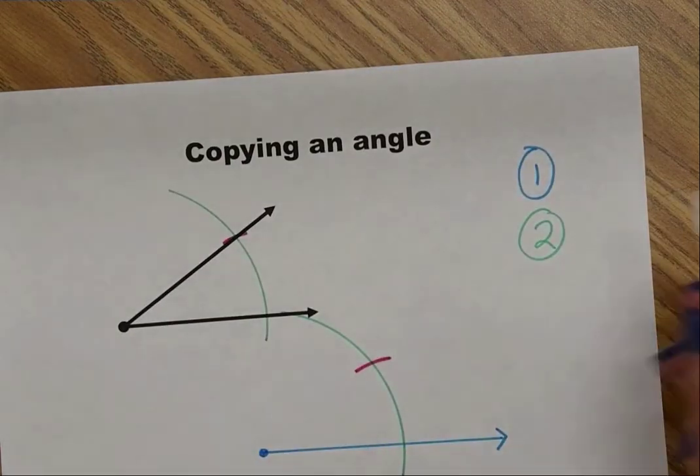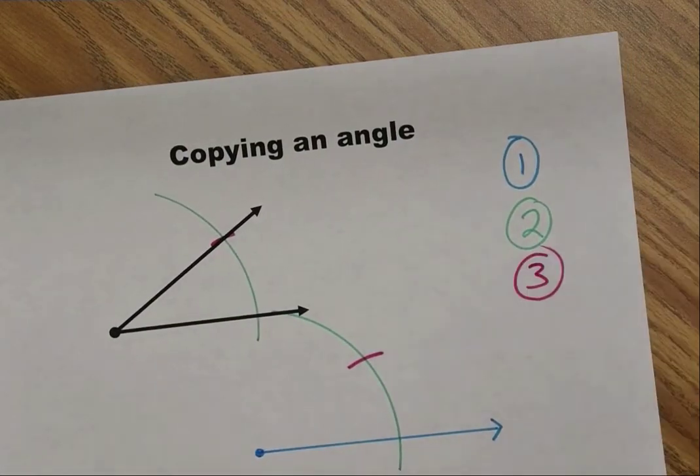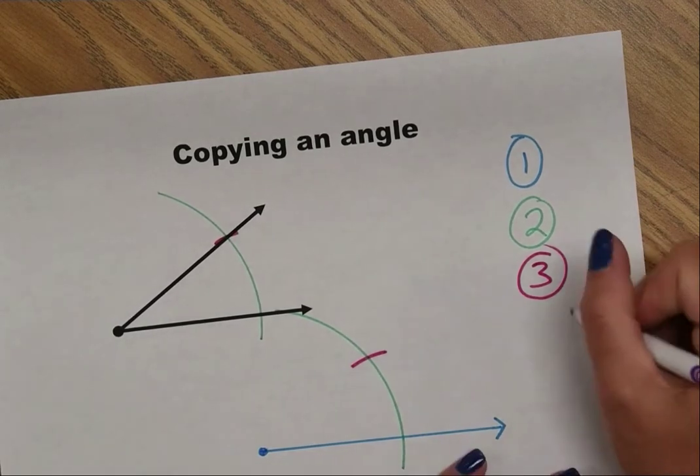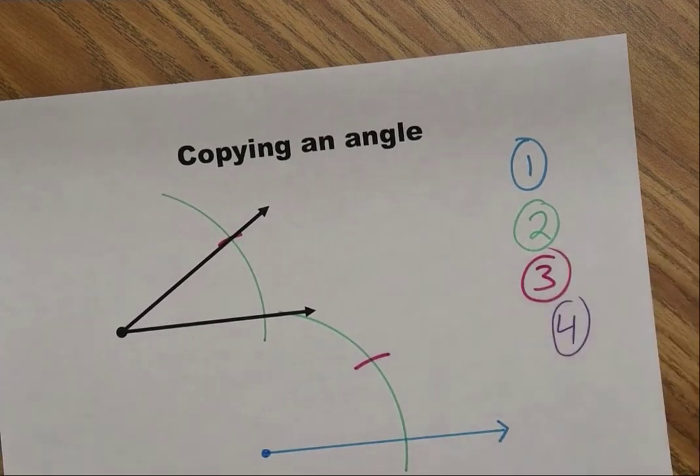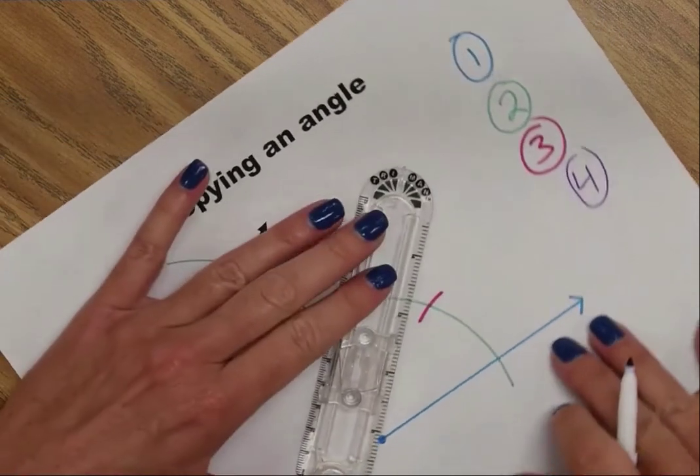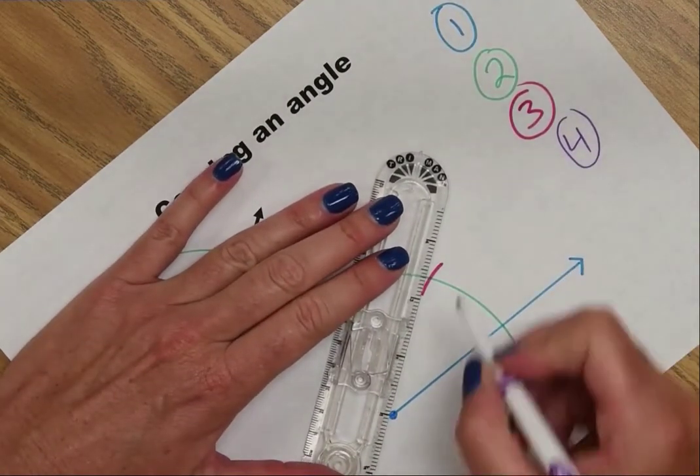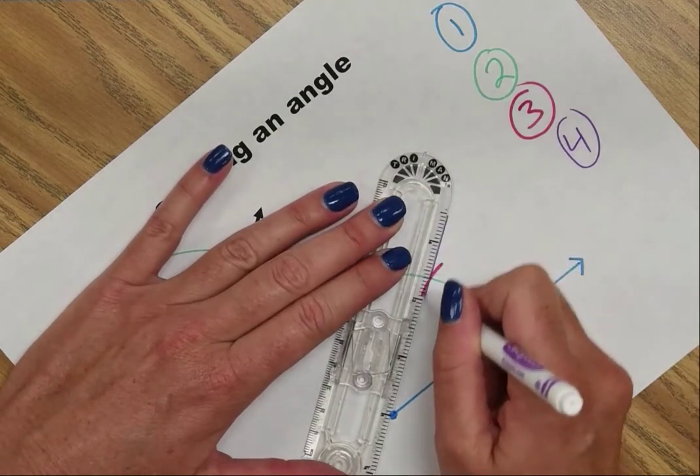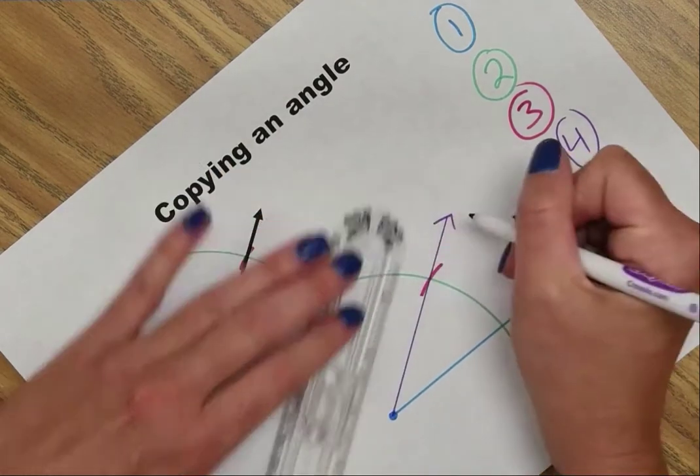Now I will use my straight edge and I will connect my end point on my ray to the intersection of the pink and green arcs. This needs to be a ray so when I'm finished I'll be sure to put an arrow at the end.